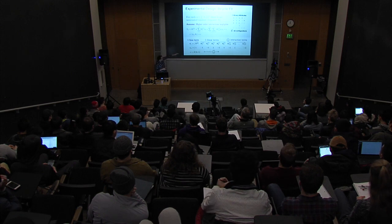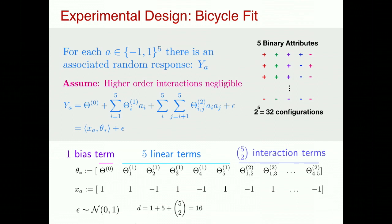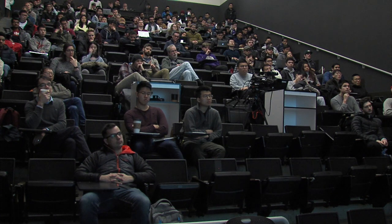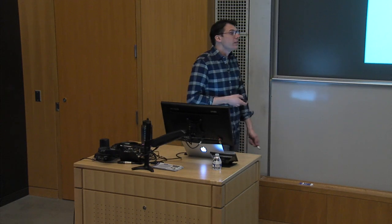The total dimension of this inner product is 16. So I choose a configuration a, construct the vector x_a in R^16, and get a noisy response. The model is genuinely reasonable — I actually believe it. More than that, the coefficients have real meaning, so I can talk about counterfactuals: if I improved the tire quality significantly, what would happen? That's why linear models are still very, very useful in this experimental design literature.